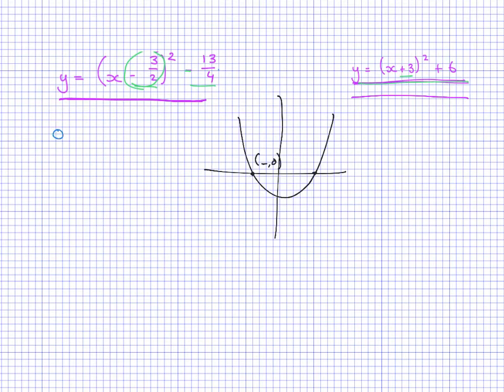It's substituting zero out for y and then simplifying or solving for x. So this is what we end up with, zero equals y, and then you just undo everything that's been done on the right-hand side one step at a time. So you would first of all add this to the left-hand side, so you'd have 13 over 4 equals x minus 3 over 2 squared.